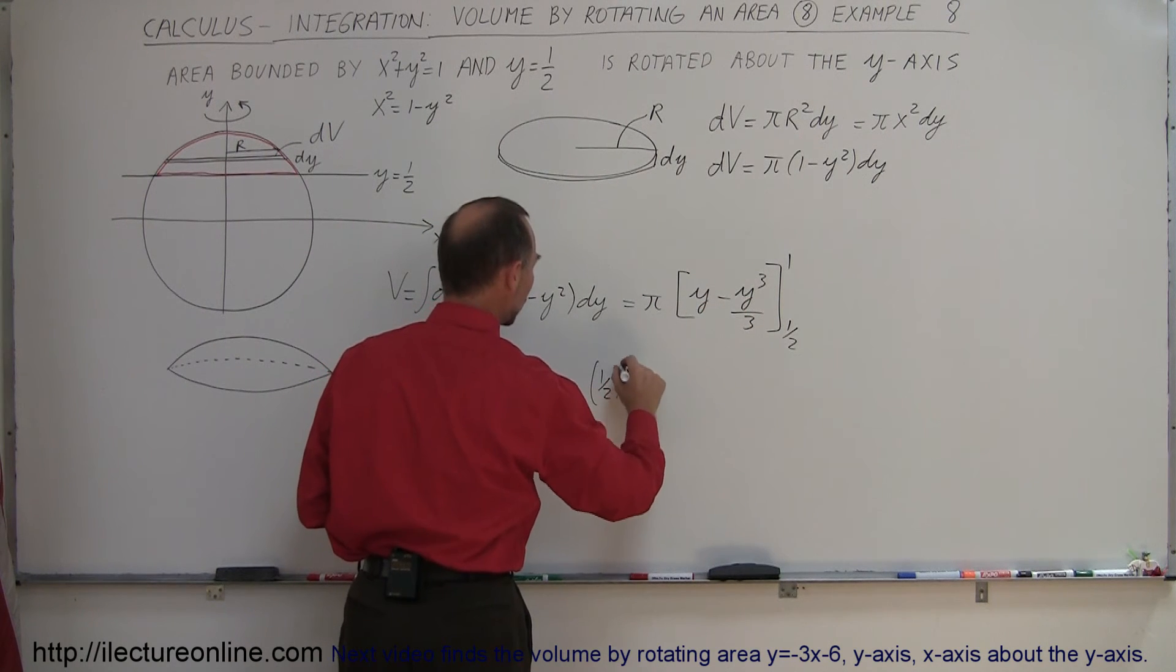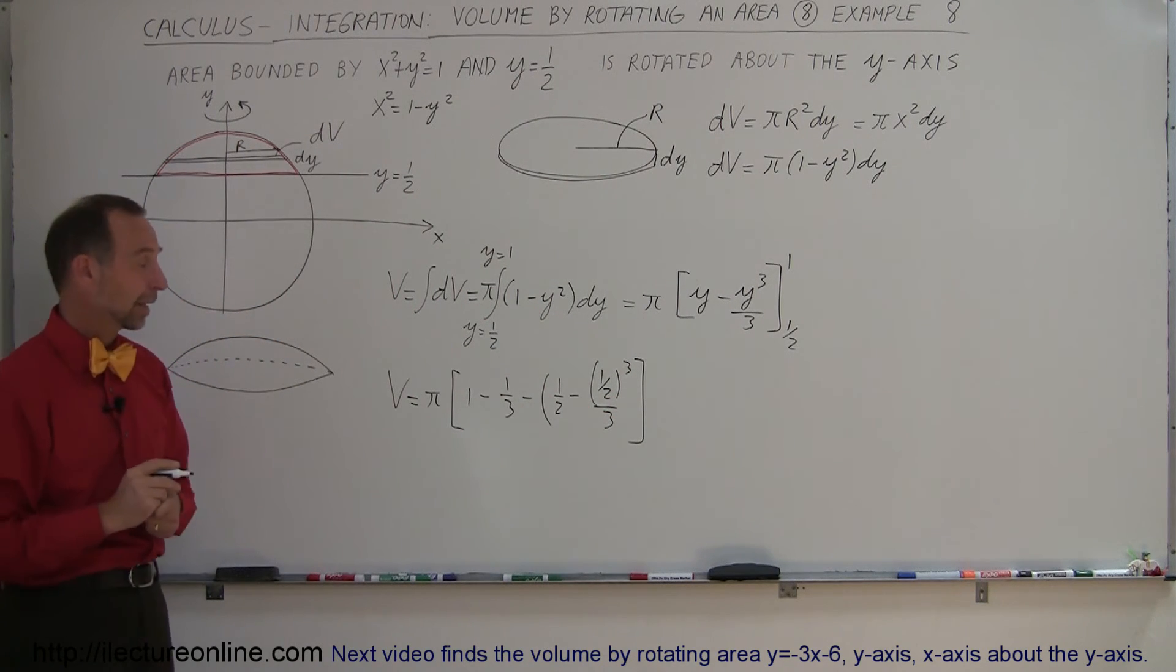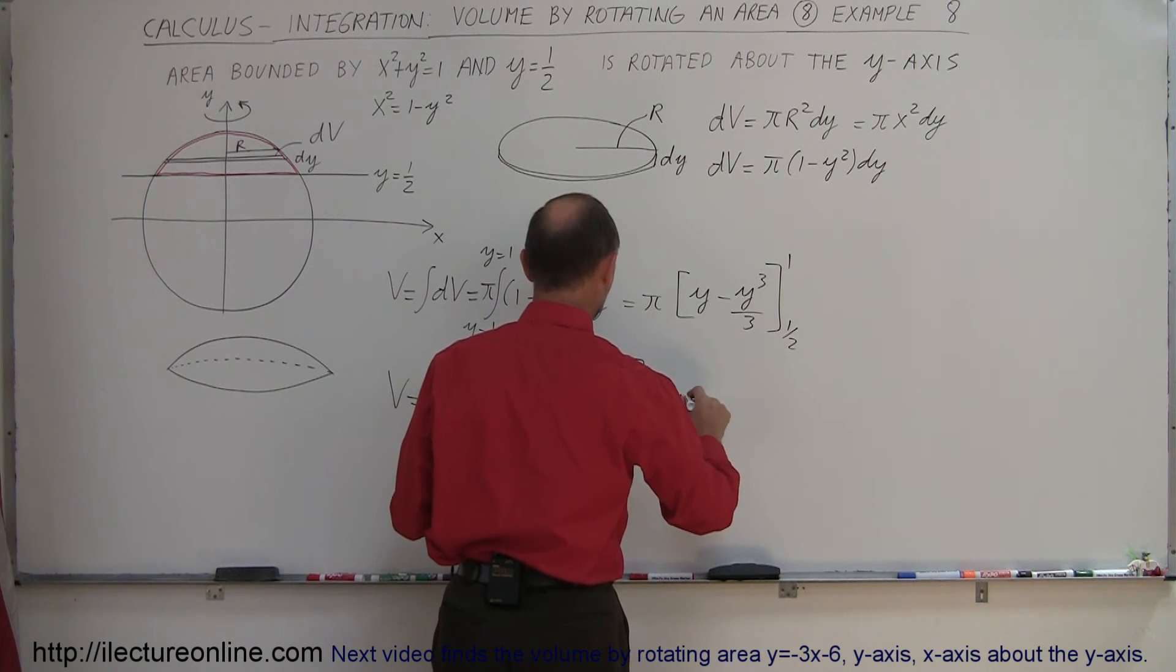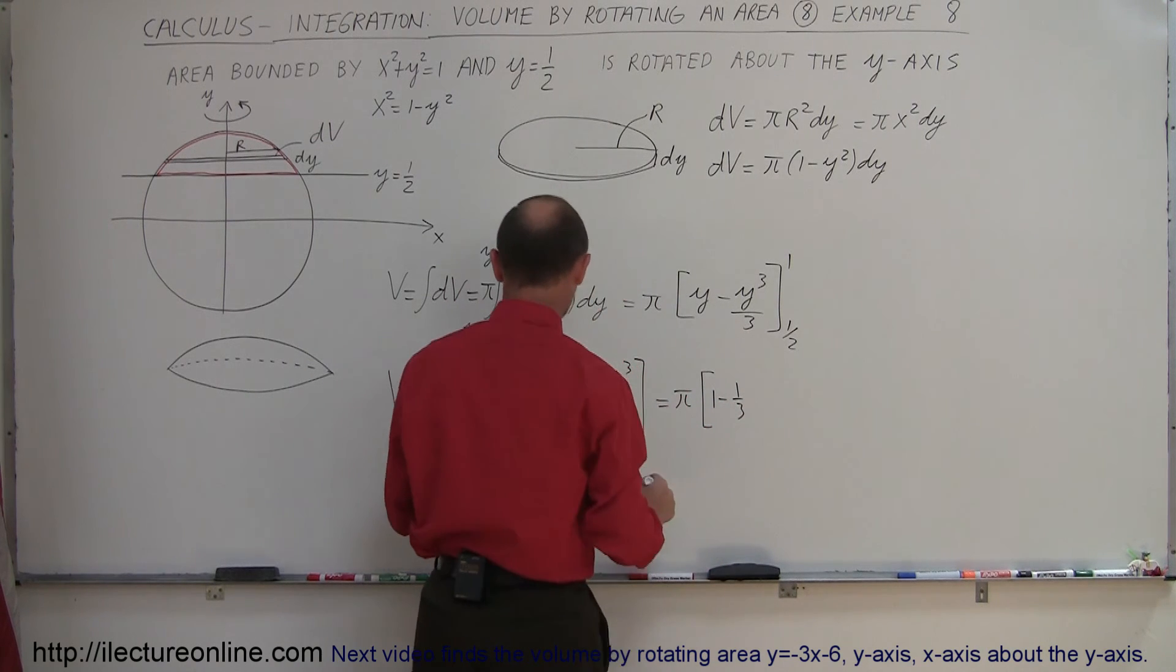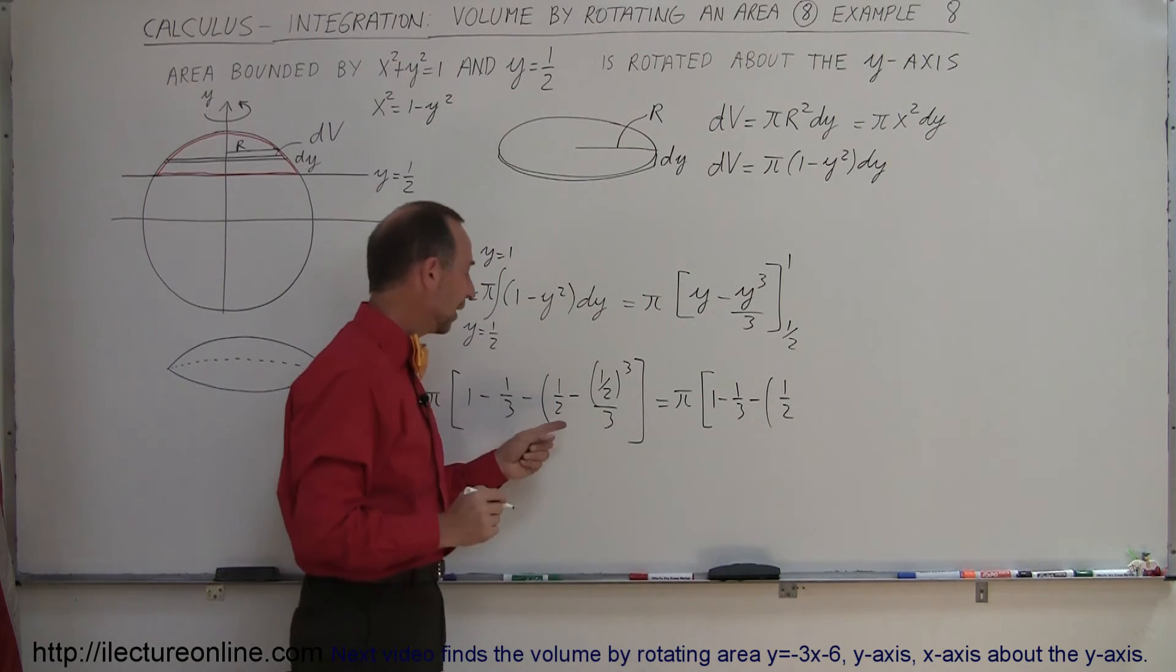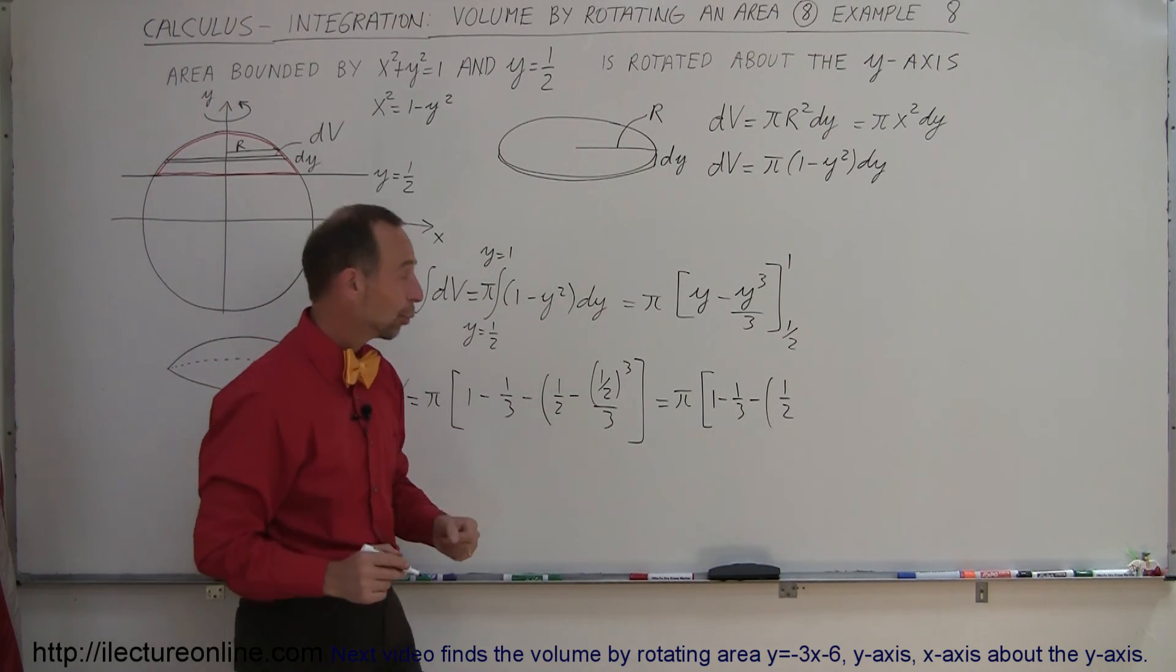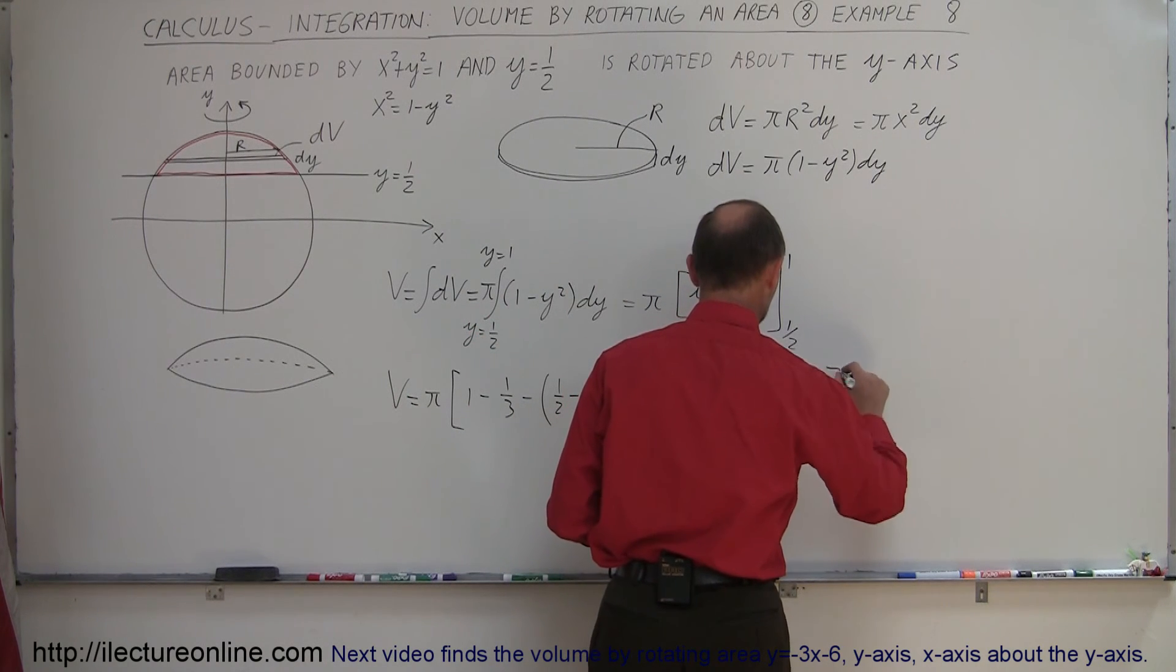Now we need to do a little arithmetic here. We have V is equal to pi times 1 minus 1 third minus, I'm going to leave the parentheses down for one more iteration. We have 1 half minus 1 8 divided by 3, which is 1 24, so minus 1 24th.